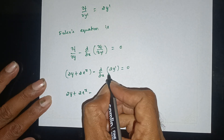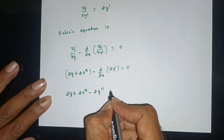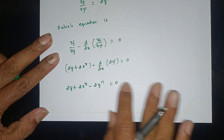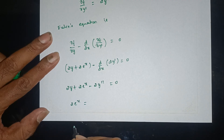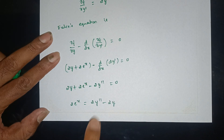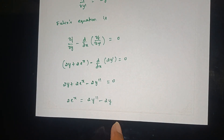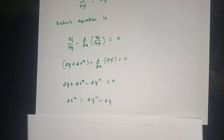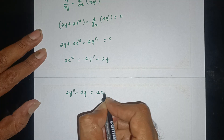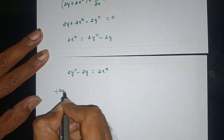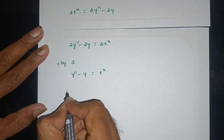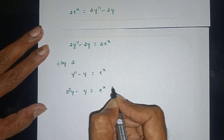Expanding: 2y plus 2e to the power x minus 2y double-dash equals zero. Simplifying, 2y double-dash minus 2y equals 2e to the power x. Dividing by 2: y double-dash minus y equals e to the power x. This can be written as d-squared y minus y equals e to the power x.